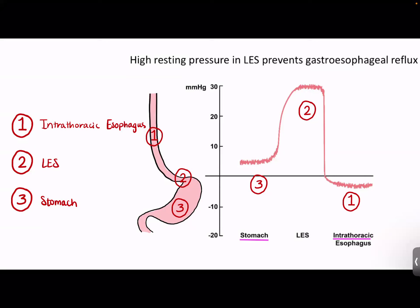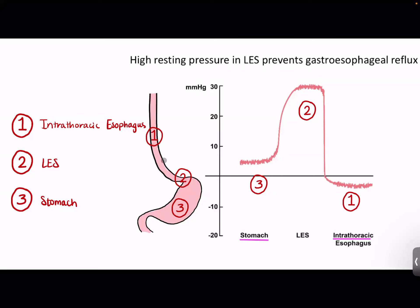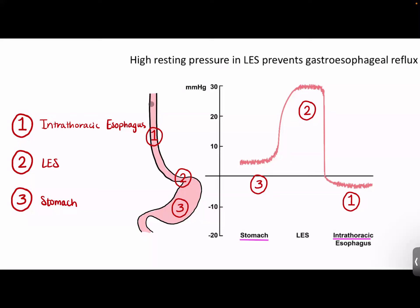The stomach produces a lot of acid — hydrochloric acid. The tone of the lower esophageal sphincter is very important to stop food and acid from going up into the esophagus. If food enters the esophagus from the stomach, we call that gastroesophageal reflux. If it's a disease, it's called GERD. The intrathoracic pressure is negative because of lung expansion in the thorax; positive pressure in the abdomen helps compress and close the sphincter.